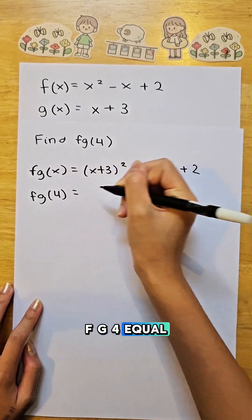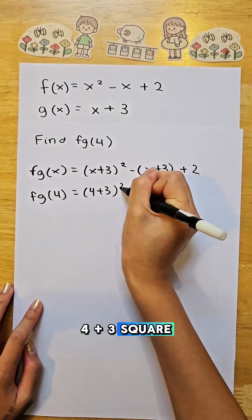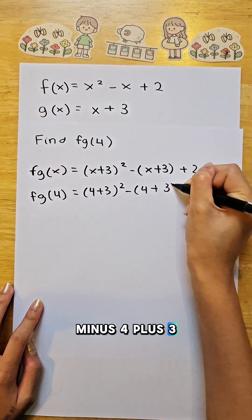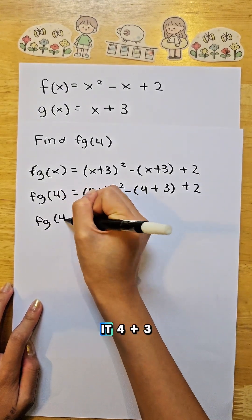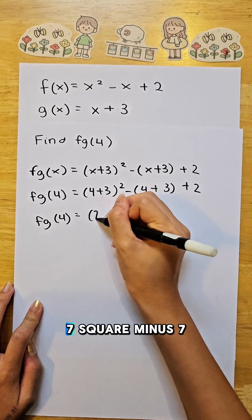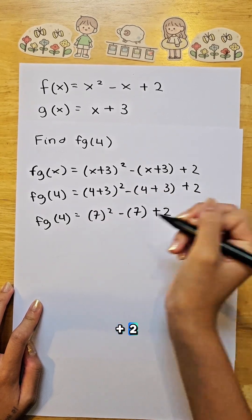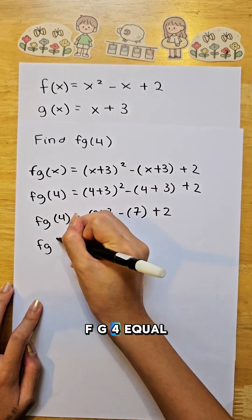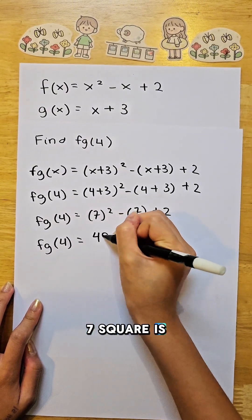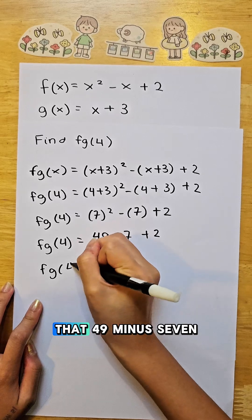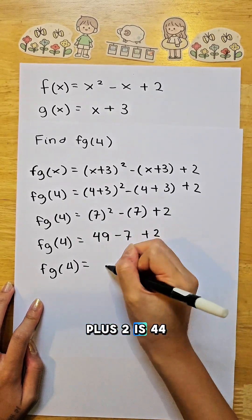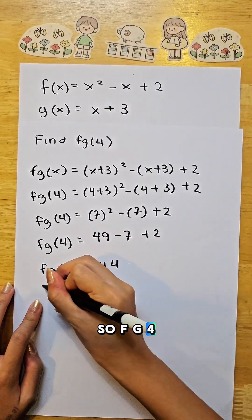fg4 equals 4 plus 3 squared minus 4 plus 3 plus 2. fg4 equals 7 squared is 49 minus 7 plus 2. When we calculate that, 49 minus 7 plus 2 is 44. So fg4 is 44.